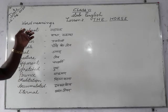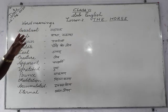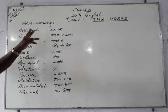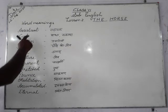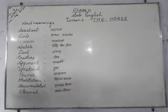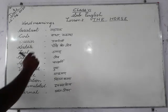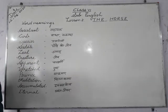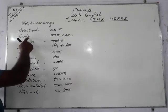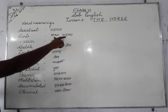Now let us look at God's pronunciation — how the words are being pronounced. I am giving these only once. Please see that the last alphabet of each word should be pronounced well. For example: assistant — please note the ending clearly. Curb.